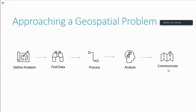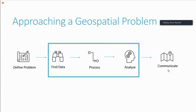How we approach a geospatial problem: we need to know the problem we're solving — for example, how to select a location for a relief camp or how to route supplies from one place to another. We need to find data that can help us get toward the answer, then process and analyze it. Most importantly, we communicate — whether through a map or an action, what do you do once you know the answer? We're going to focus on the middle pieces: where do we find data, and what are some ways we can start to process and analyze it?